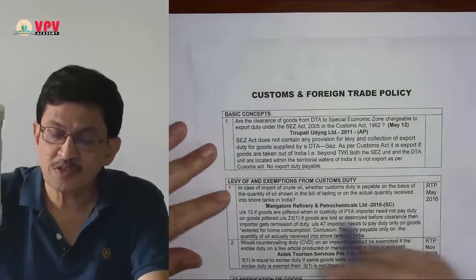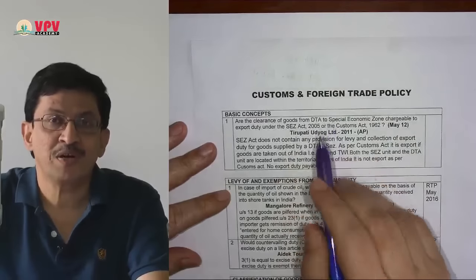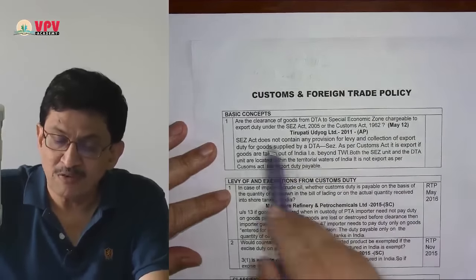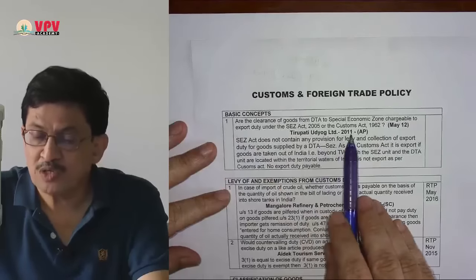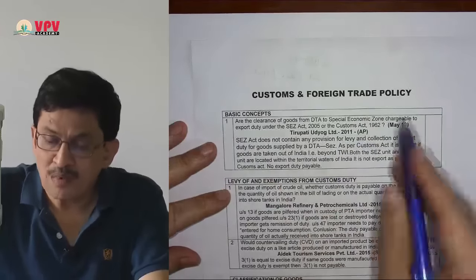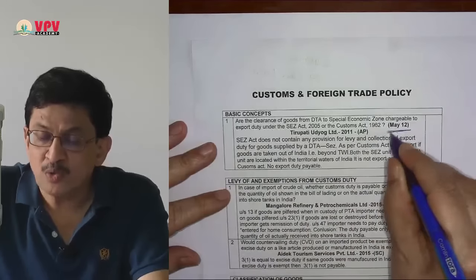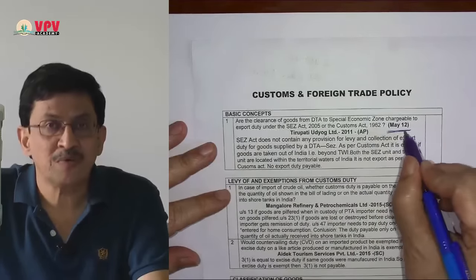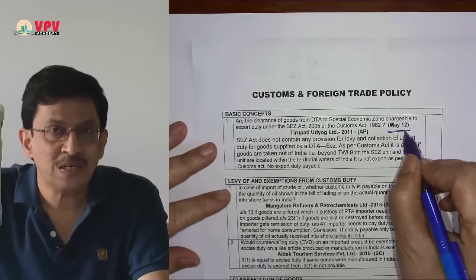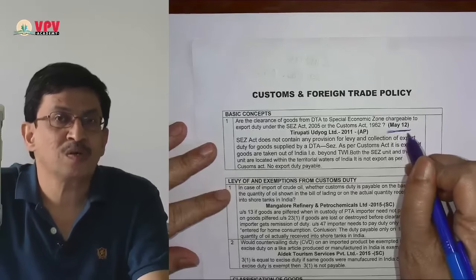Whether it is the summary or the detailed case law, some markings you are going to find. For example, the first case law, Tirupati Udyog Limited, 2011, Andhra Pradesh — one marking shows it has already come in the May 2012 attempt. As you can understand, a case law which has already appeared should be considered less important than others.